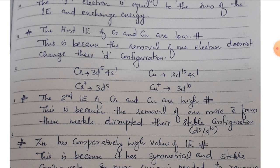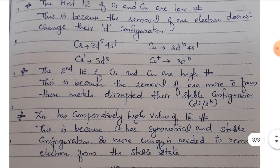The first ionization enthalpy of chromium and copper is low. However, the second ionization enthalpy of chromium and copper is high. This is because the removal of one more electron from these metals disrupts their stable configuration — half-filled for CR+ and completely-filled for Cu+. So high energy, that is high second ionization enthalpy, is needed.